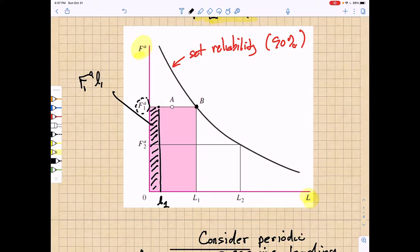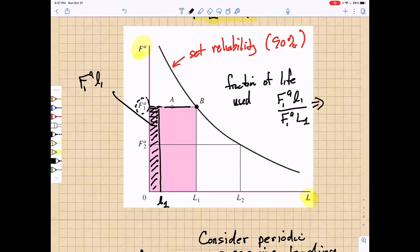And so the fraction of life used up will be a ratio of that rectangular area to the total rectangular area. The fraction of life used is going to be F1 to the a power times l1 divided by F1 to the a power times capital L1. Well that just gives me l1 over capital L1.